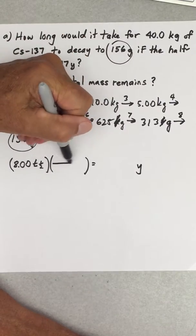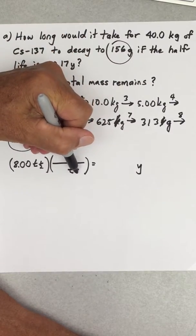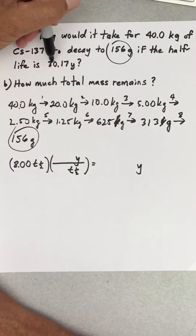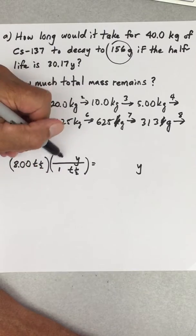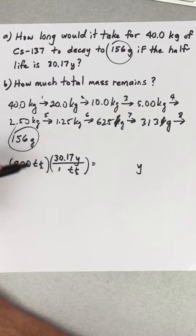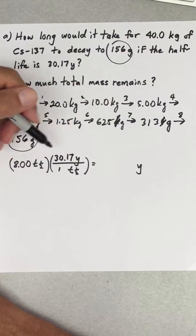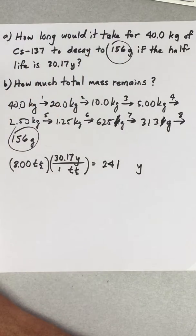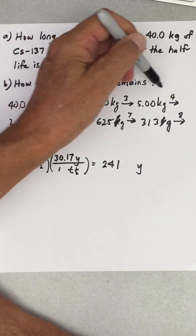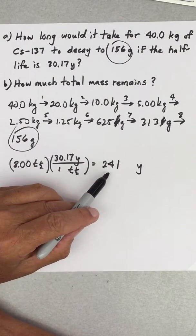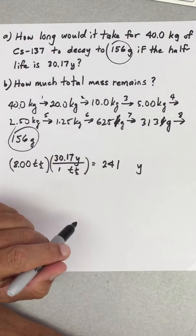So that means I need to get rid of half-life and keep years. Here's our conversion factor: one half-life is 30.17 years. You see half-lives are going to cancel out and I'll get 241 years. So it took eight half-lives to get to where we were going, and there's 30.17 years per half-life. That corresponds to 241 years, and so that is the answer.